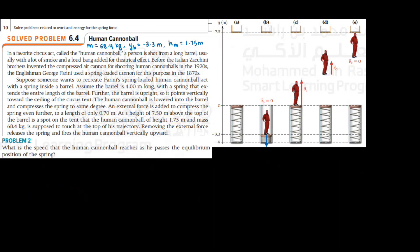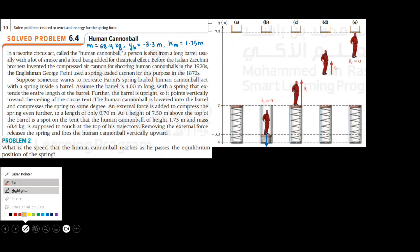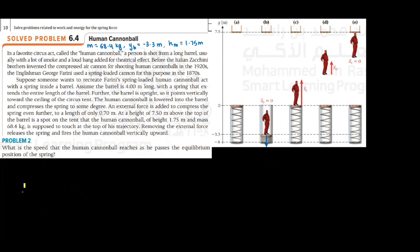Part two of this question wants you to find what is the speed of the human cannonball as he passes the equilibrium position of the spring. In part two, they want us to find what is the speed of the human when he reaches the equilibrium position, which is position C.